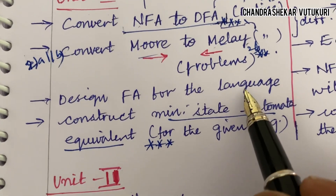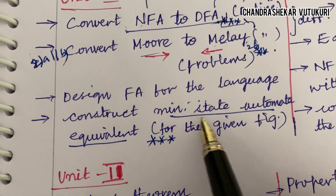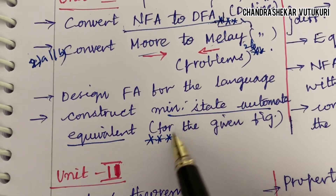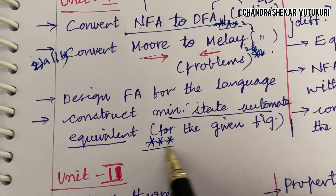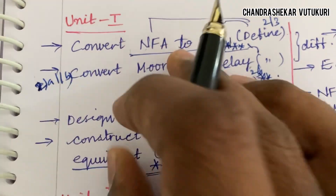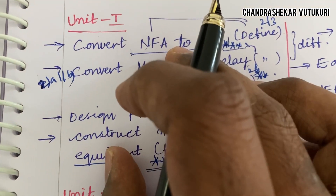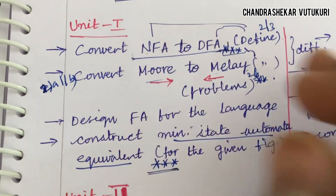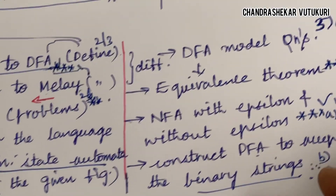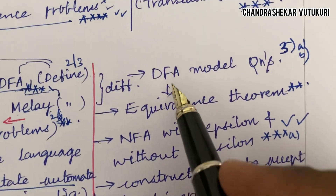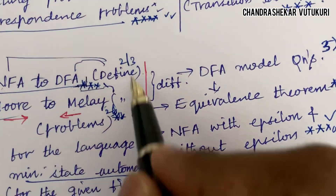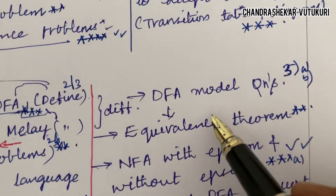Design FA for a given language, and Construct minimum state automata equivalent to a given figure, are topmost gunshot questions. Questions 2A and 2B will come from this area, or sometimes you may get only one question directly. The difference among these topics may also be one of the questions.